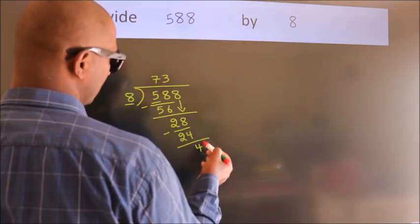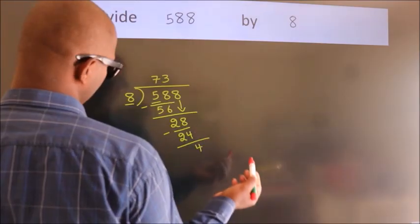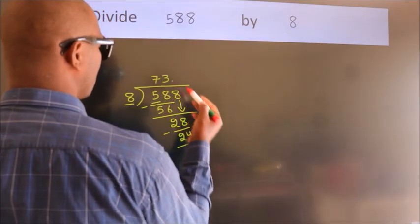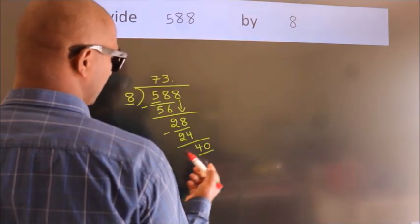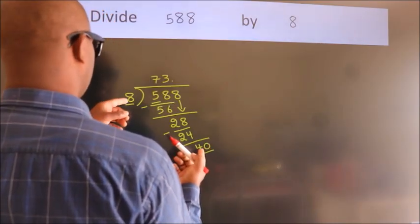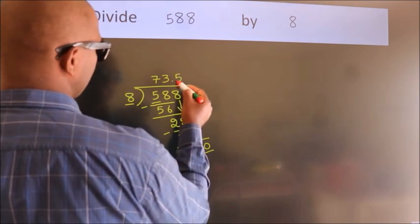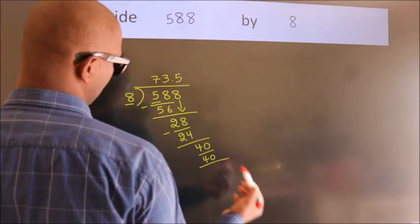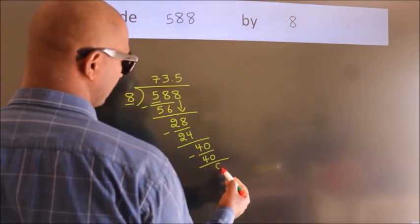After this, there are no more numbers to bring down. So what we do is we put a dot and take 0. So now we have 40. A number close to 40 in the 8 times table is 8 fives 40. Now we subtract. We get 0.